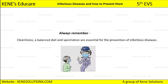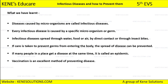Always remember: cleanliness, a balanced diet, and vaccination are essential for the prevention of infectious diseases. By keeping cleanliness, taking a healthy and balanced diet, and getting vaccinated, these are the three essential ways to prevent any infectious disease from spreading. This is the most important point in this lesson.